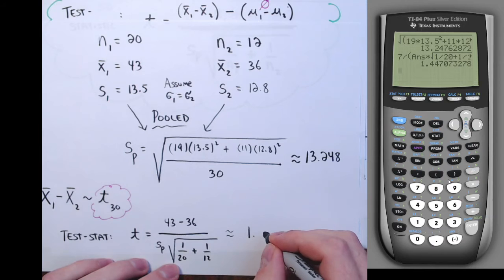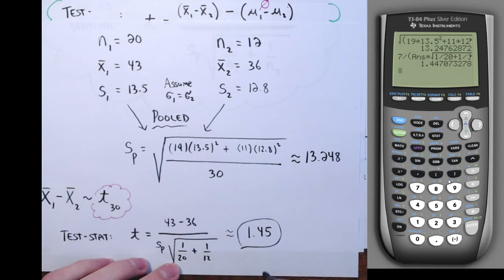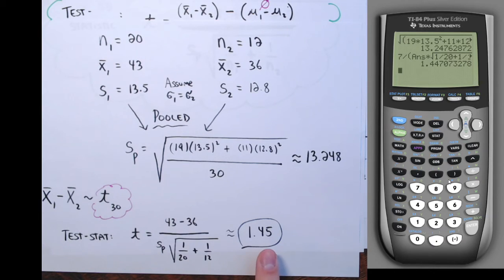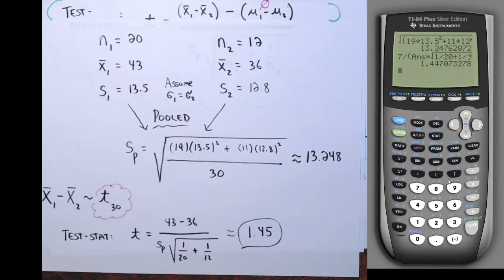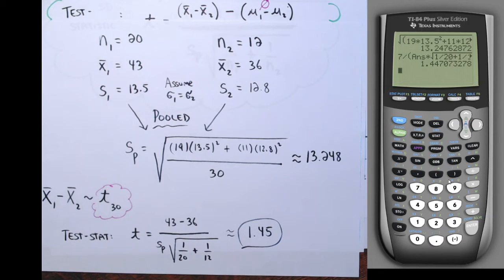The t-score is about 1.45, rounded to two decimal places. These are both parts of my answer: the test statistic for the difference in our sample means and the number of degrees of freedom for our t-distribution. This t-score means the difference in our sample means is 1.45 standard deviations above what's assumed to be the average difference from the null hypothesis. That's not very far from the mean, so there's probably a good chance I wouldn't reject the null hypothesis.